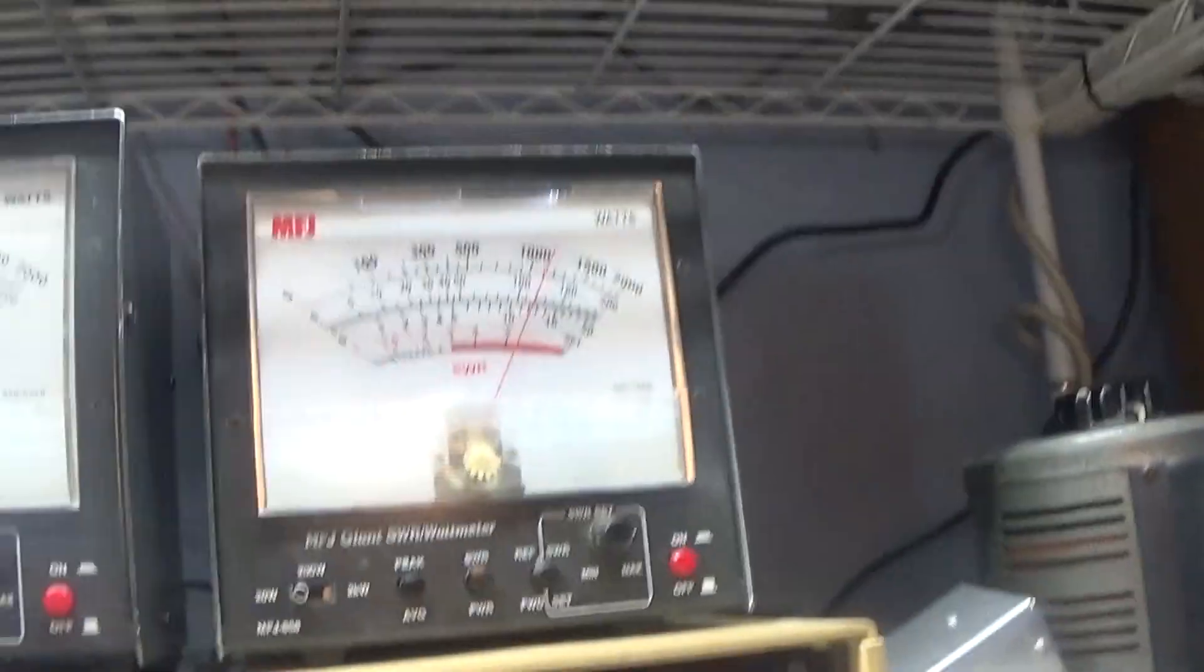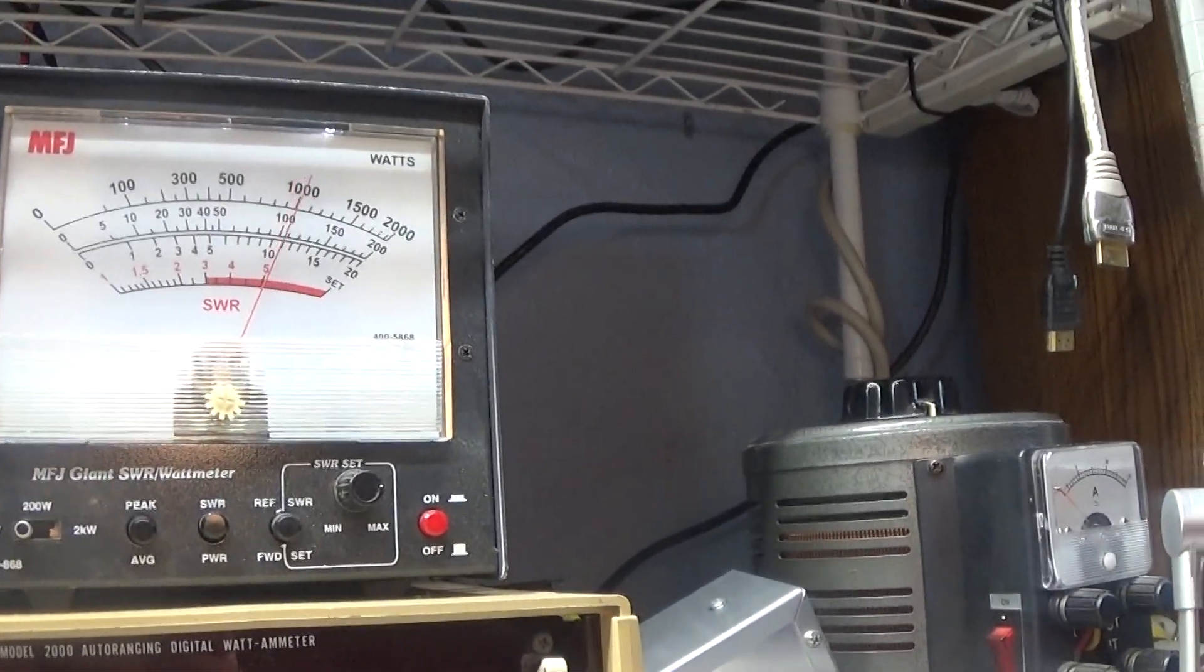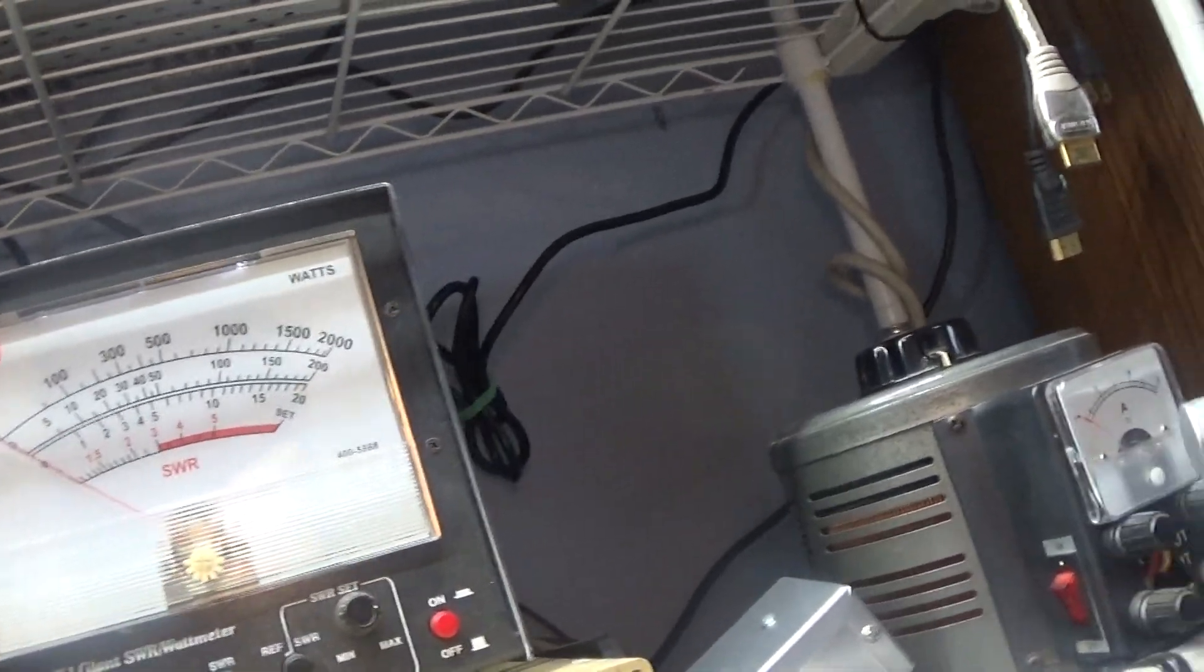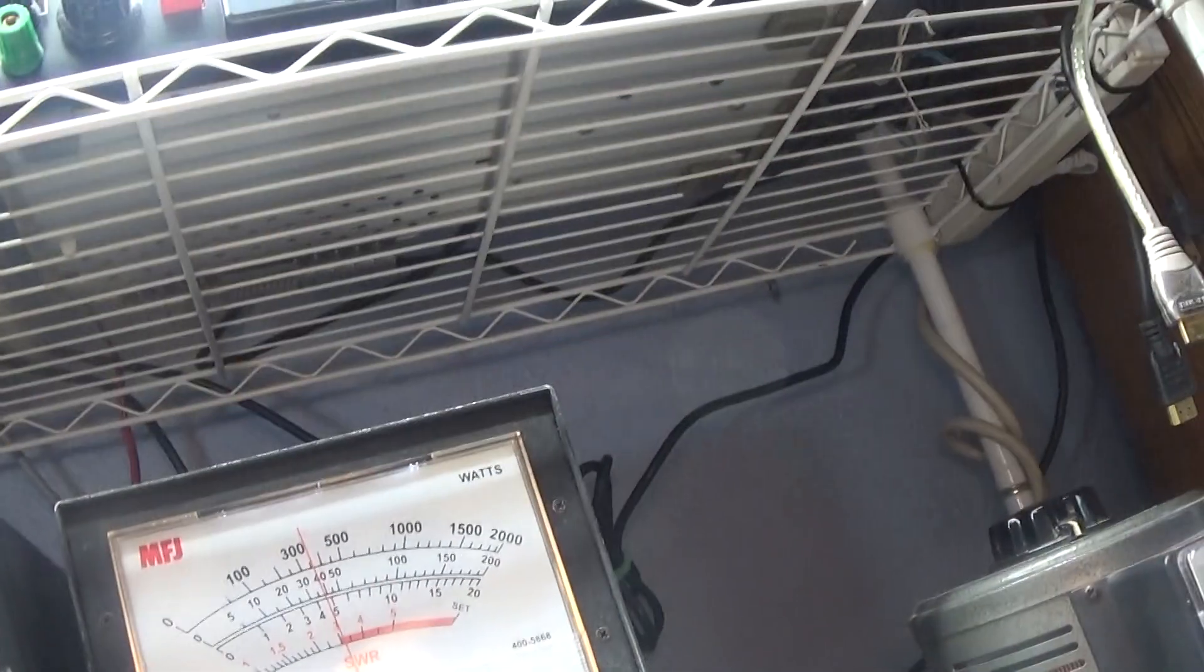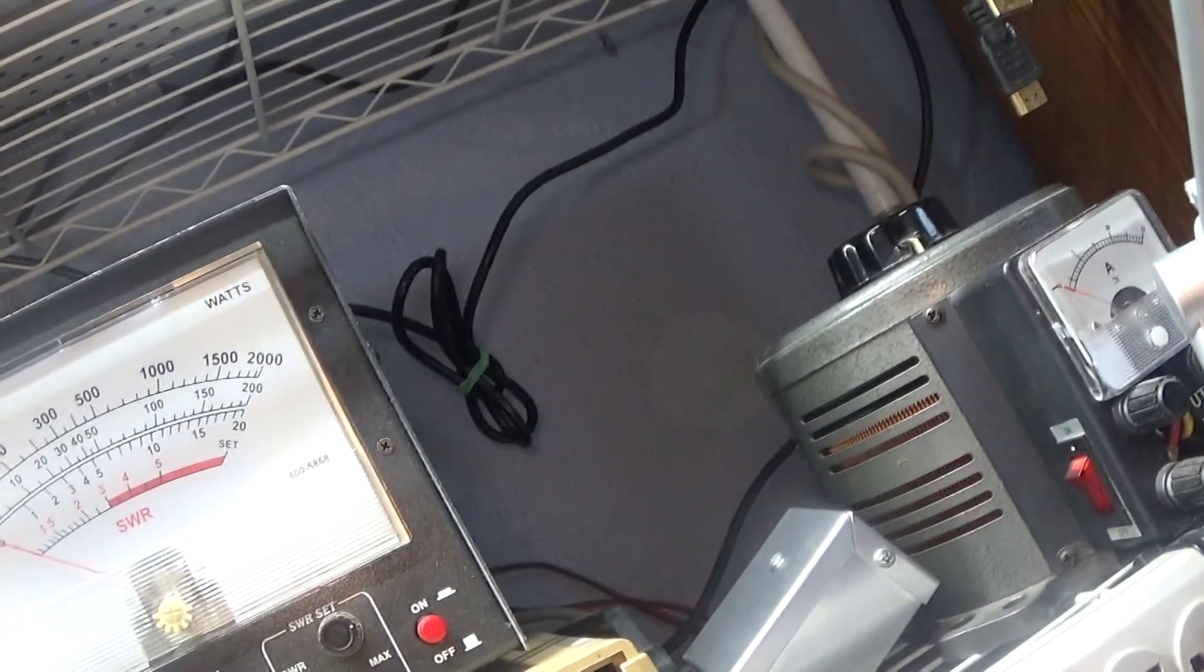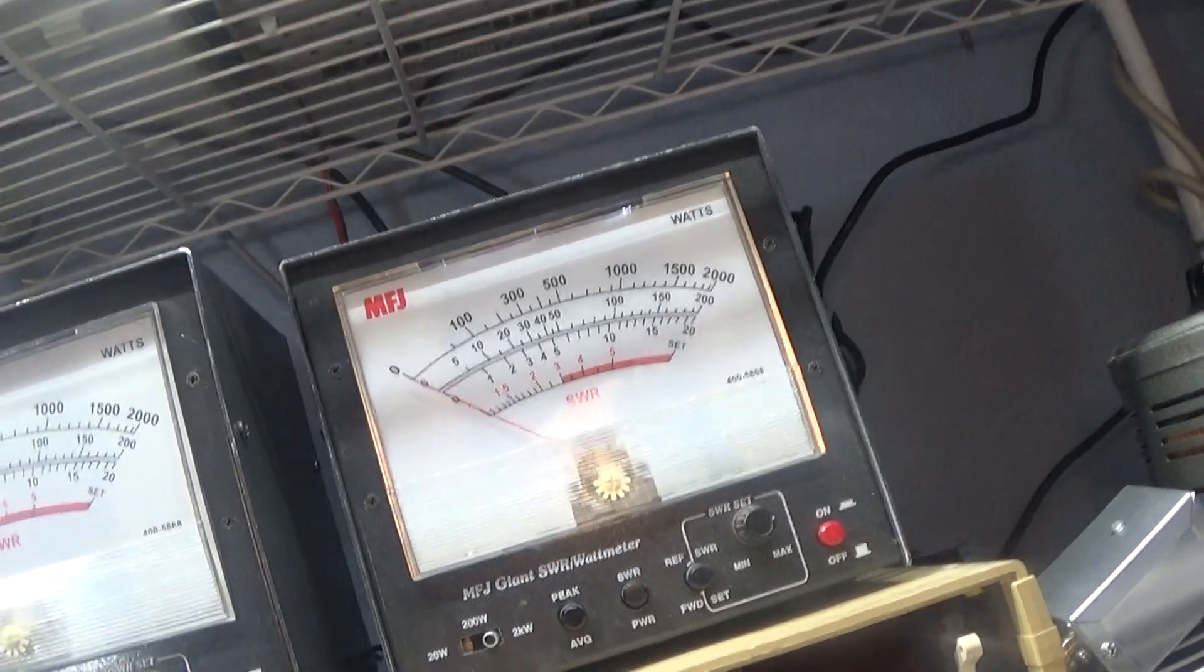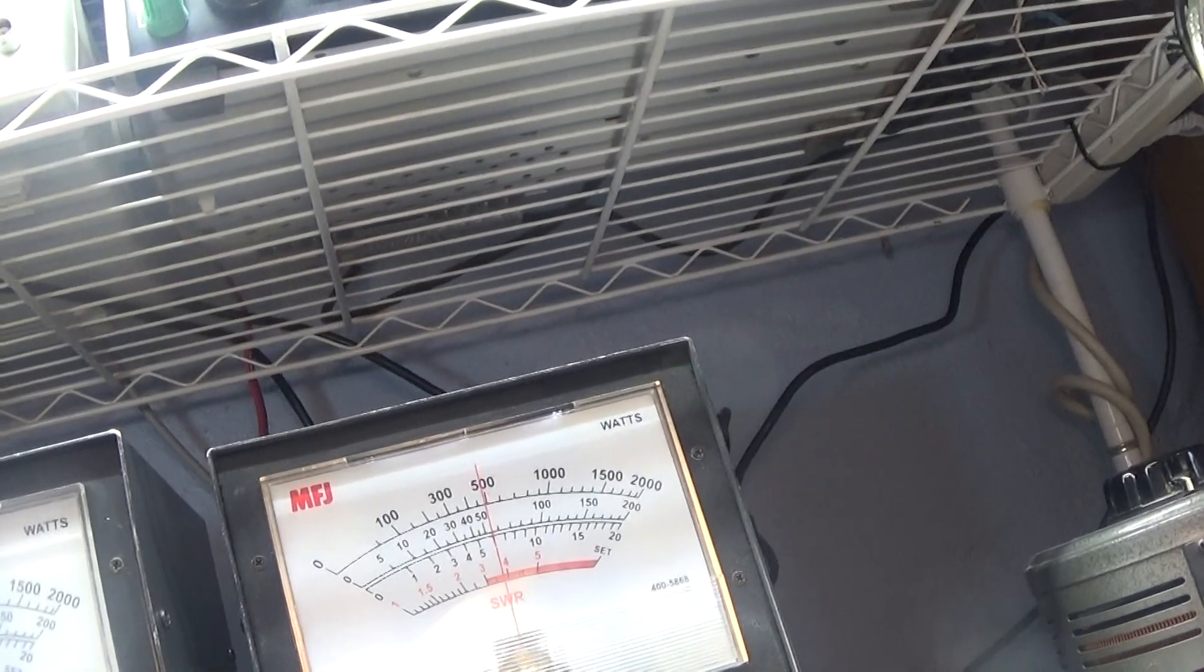Testing on peak, the driver is swinging about 12 to 14 watts. Let's put it on average, it's swinging about 7 watts forward on average. Now we're going to put it on the 2000 watt scale and turn the amp on and keep it on the low side. Let's put it on 200 for the low, and this is just the four driver tubes without the six final tubes.